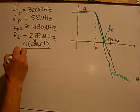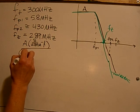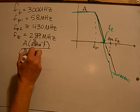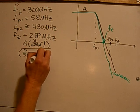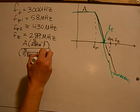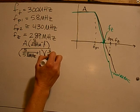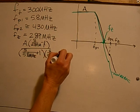And then the two poles, 5.8 MHz, 430 MHz, and then Ft plus one.